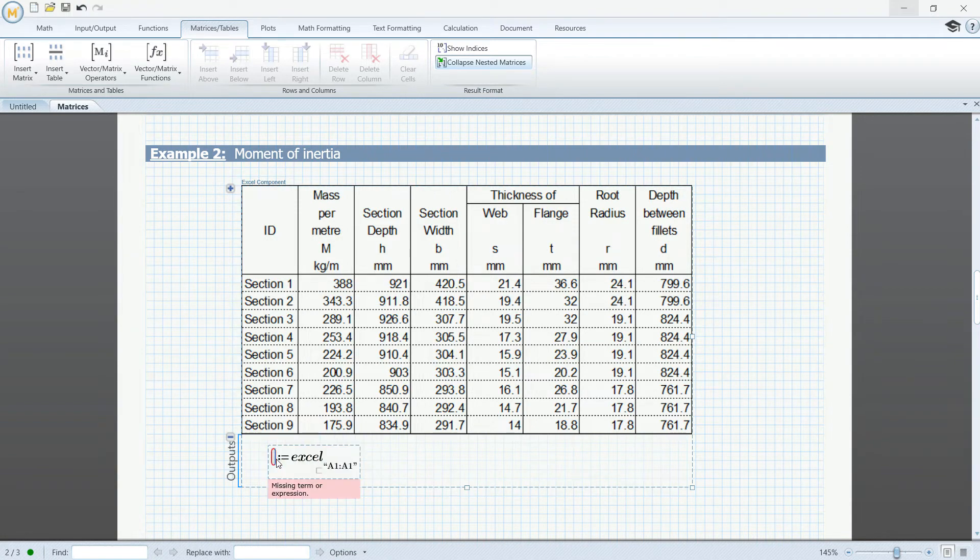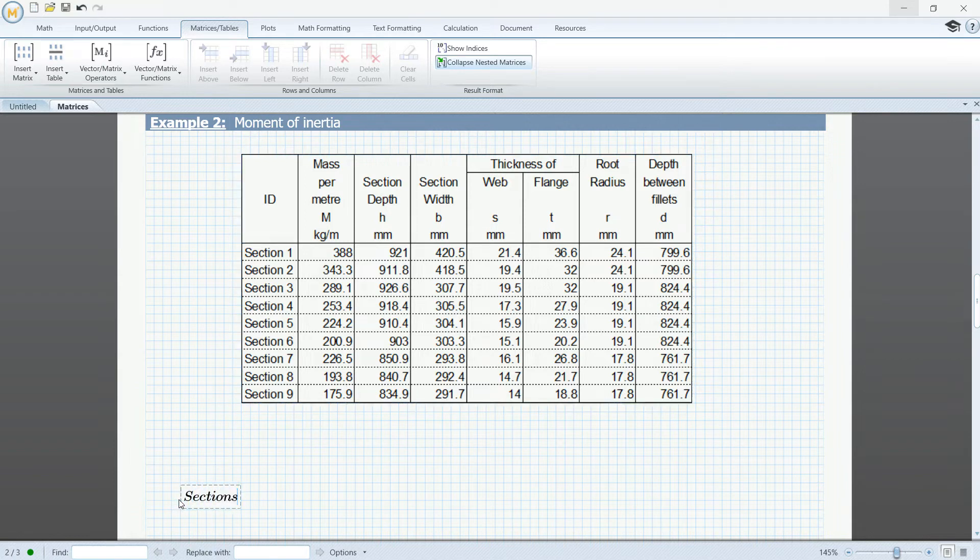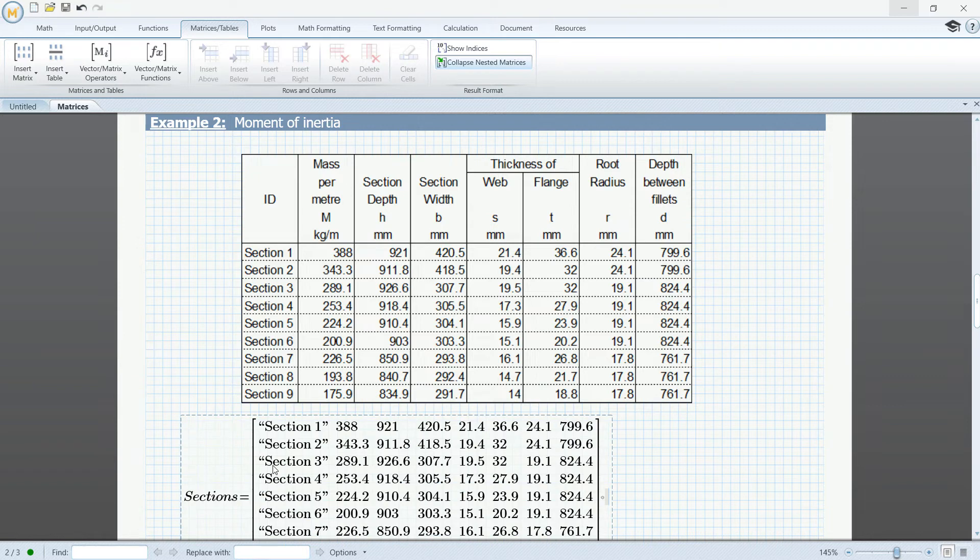I'm going to assign the output to a variable. I'm going to call it sections. And I'm also going to specify the range of data that I want to read. So, this will be A6 going to H14. So, that's the range of data that we want to read from the Excel component. And we're going to minimize this. If we evaluate now the sections variable, we will see that the data has been automatically passed to that variable.